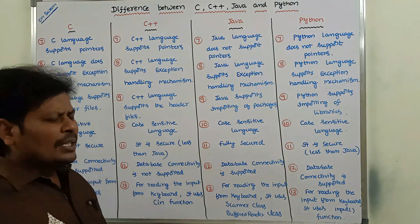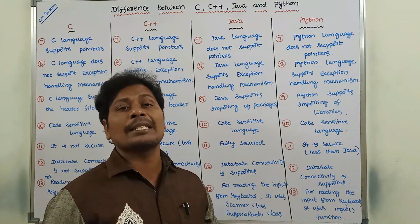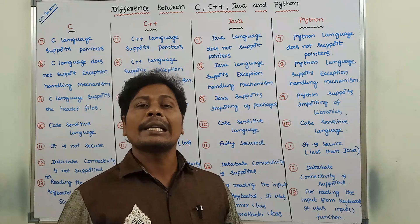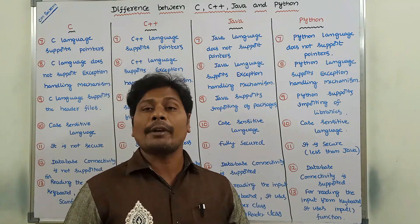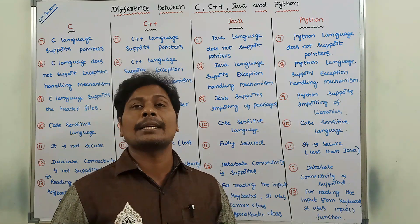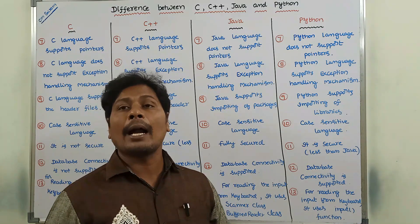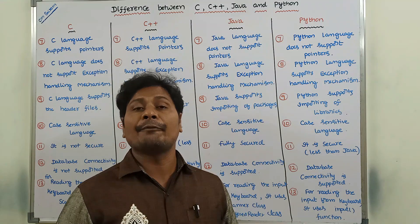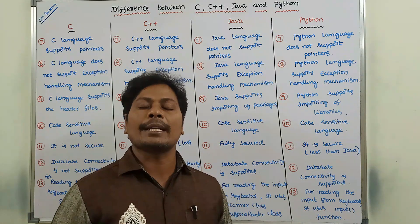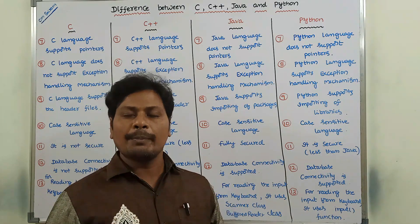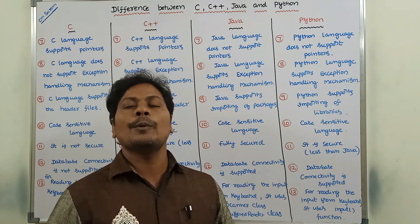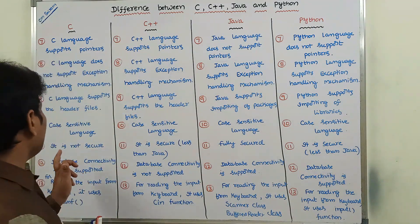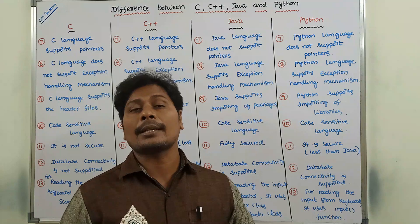Next point: C, C++, Java and Python are all case sensitive languages. Case sensitive means that upper case and lower case letters are not the same. For example, small 'a' and capital 'A' are not the same because they follow ASCII values — American Standard Code for Information Interchange. The ASCII value of small 'a' is 97 and capital 'A' is 65, so they are treated as different.